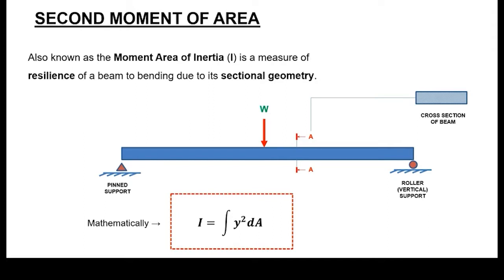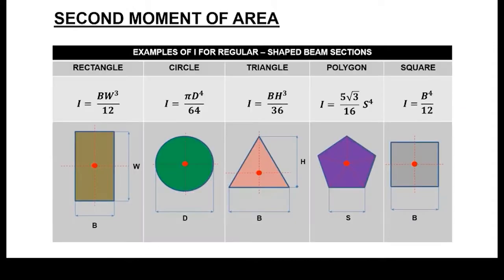Let's assume that this is the beam. This cross section here is what you see when you cut the given beam, in relation to where the load is being applied — that is the point of interest. These are some standard formulas that can be used in calculating or predicting the second moment of area.